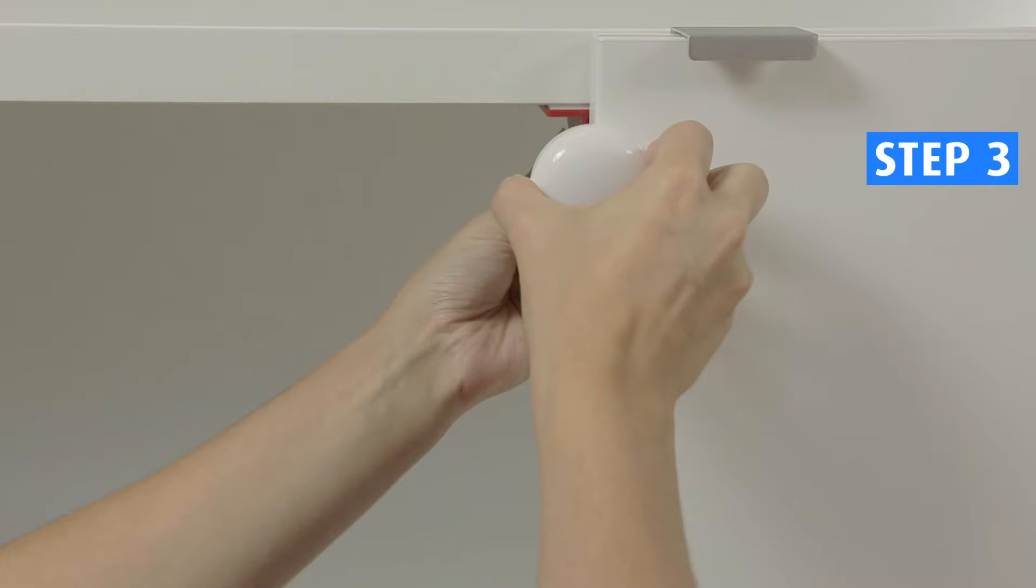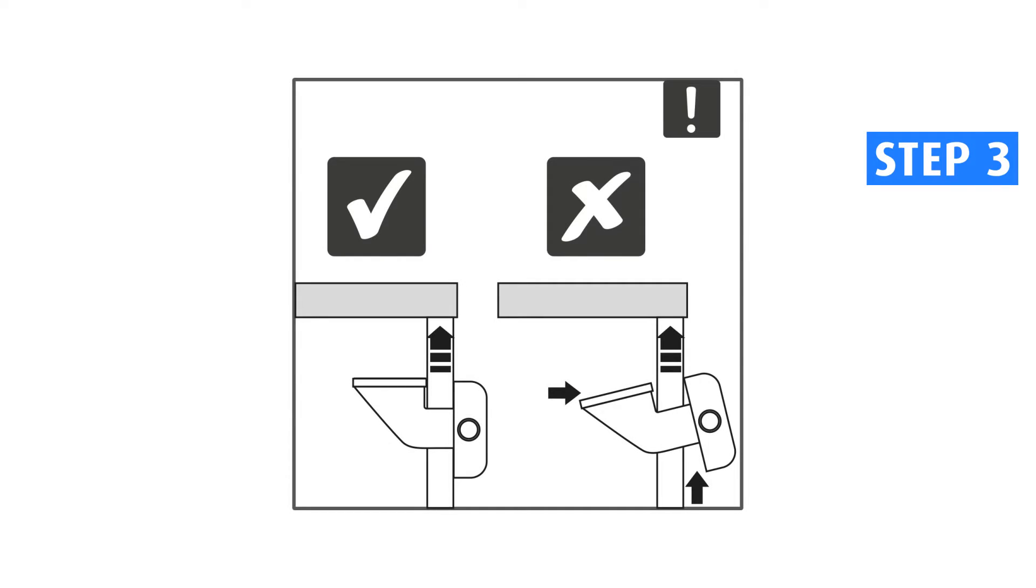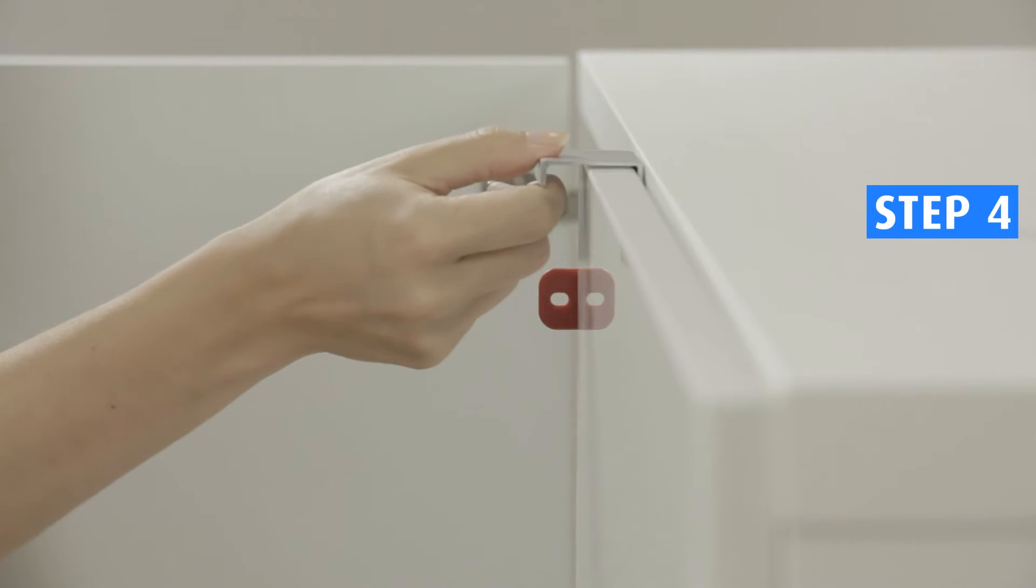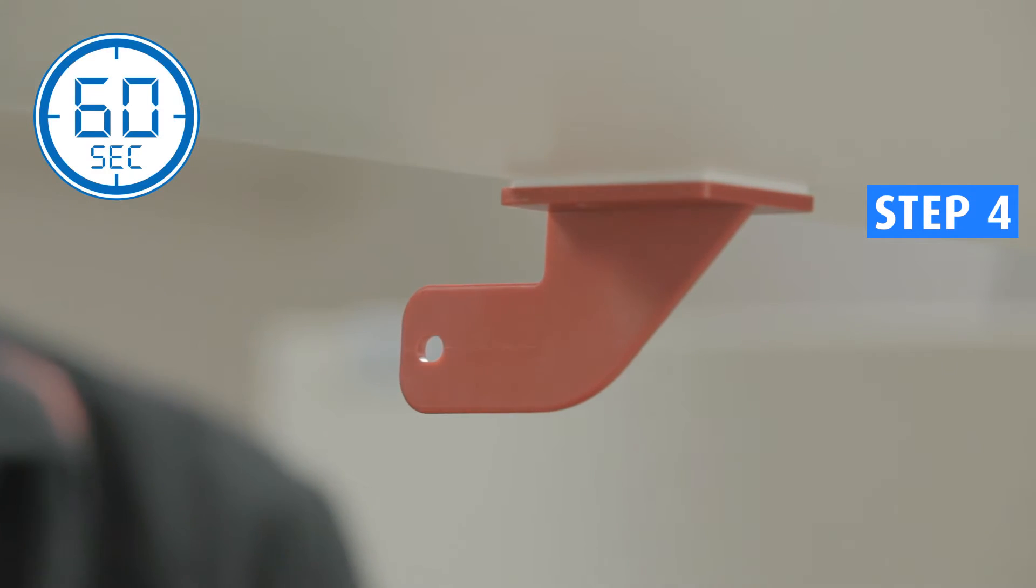It is important that there is no gap between the cabinet lock and the cabinet door. Press and hold part B for 60 seconds, making sure that the entire adhesive surface is in contact.